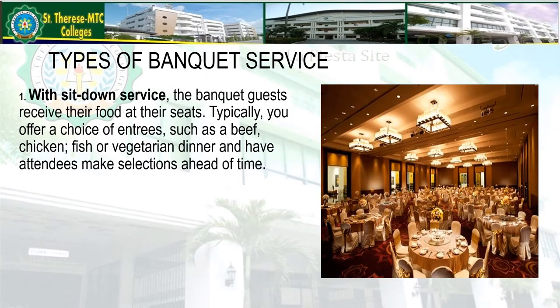We have types of banquet service. The first one is sit-down service. Banquet guests receive their food at their seats. Typically, you offer a choice of entrees such as beef, chicken, fish, or vegetarian dinner, and have attendees make selections ahead of time. This requires extra work in the planning stage, such as keeping track of not only who is attending but what dinner selections they made.